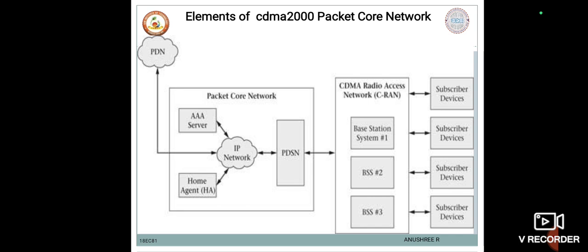The Packet Data Serving Node PDSN provides the needed IP transport capability to connect the CRAN and hence the subscriber to the public data network. The PDSN connects to the CRAN through the A4 interface and also interfaces the CRAN with the Home Agent and the AAA nodes. In this capacity, it sets up, maintains and terminates secure communication with the Home Agent and AAA nodes. It further serves as a point of connection between the radio network and the IP network, provides IP service management, and serves as a foreign agent to register network visitors to facilitate wireless mobile IP functionality.